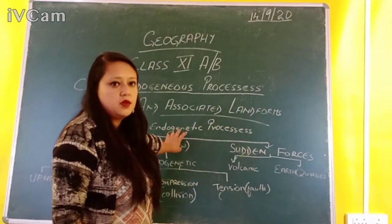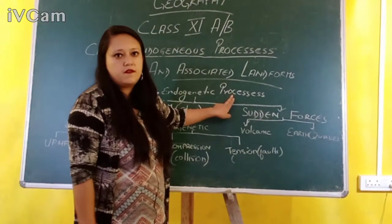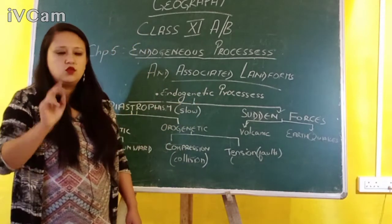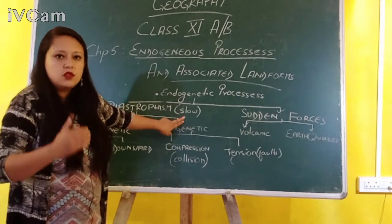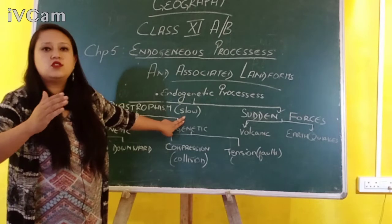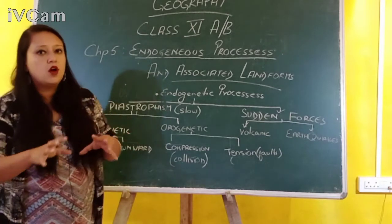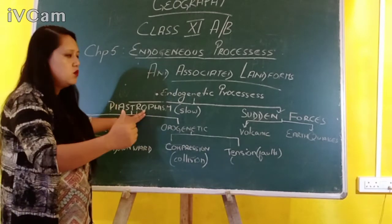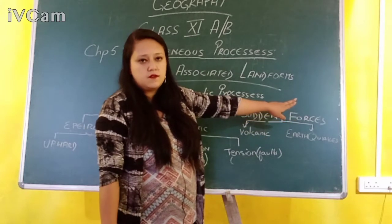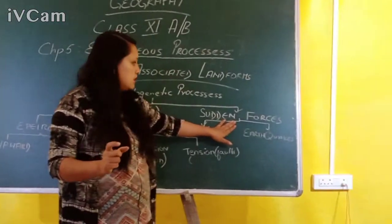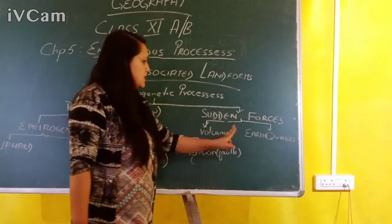Endogenetic processes are the forces exerted within the surface of the earth, and they are divided into two parts. One type is diastrophism, or diastrophic forces, which is extremely slow — the changes on the surface of the earth are visible only after billions or millions of years. The other type is sudden forces, where all of a sudden a force is exerted from within the earth's surface, causing changes in the physical features of the earth. The sudden force is divided into two parts: volcanic forces and earthquakes.